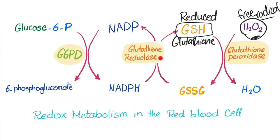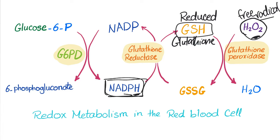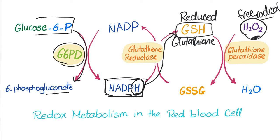To reduce glutathione from its oxidized state, we need NADPH. When NADPH is in its reduced form — the H form — we are happy, because reduced NADPH can pass its reduction to glutathione to reduce it. Glucose 6-phosphate is converted to 6-phosphogluconate by G6PD, and by the same token NADP+ is converted into NADPH. This was the HMP shunt from the previous slide.